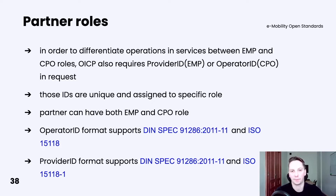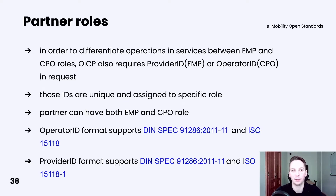An OICP message format can be the same for both types of roles, CPO or EMP. Because of that, Hubject needed to create another mechanism in order to differentiate service operations between those two roles. You as a partner need to provide in each request either a provider ID if you are an EMP, or an operator ID if you are a CPO. Those two identifiers are unique within the whole Hubject platform and are assigned to you as a partner during the onboarding process.